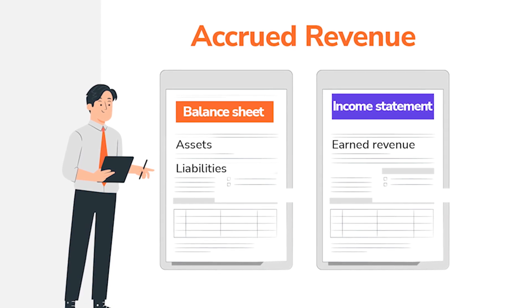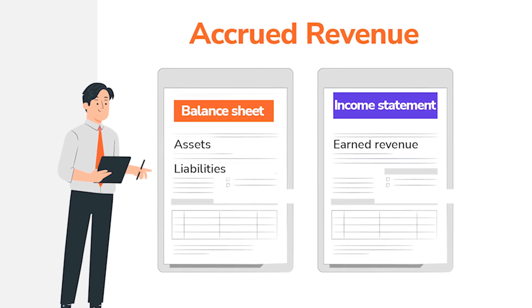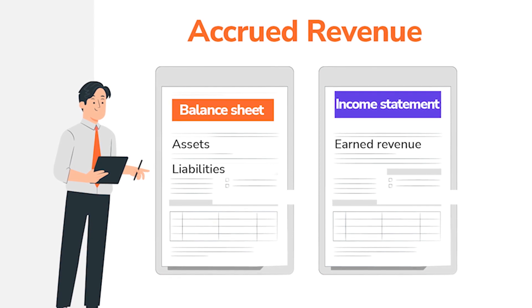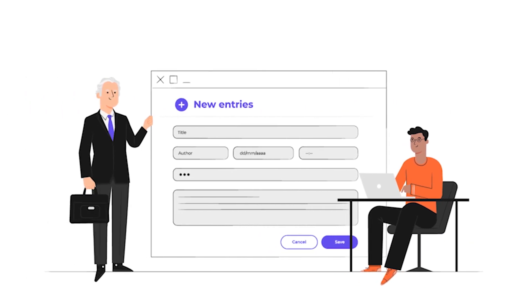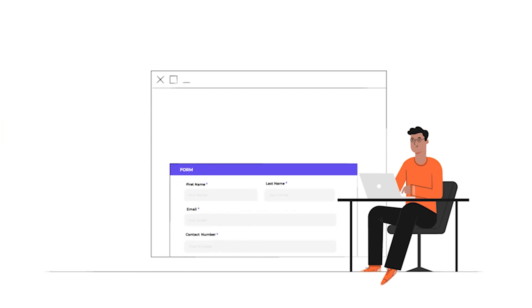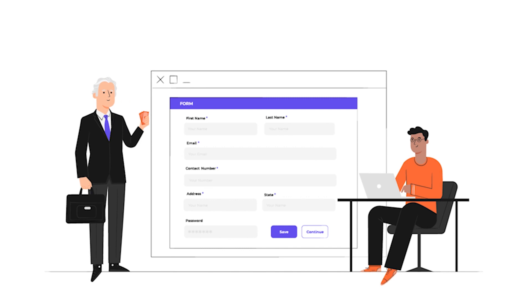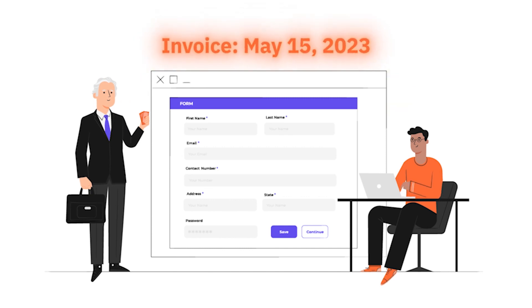Let's look at how to record accrued revenue on your balance sheet first. A balance sheet is a statement that outlines your assets and liabilities. Anything added to your balance sheet doesn't impact your income statement. Imagine that you're a website developer. A business owner approaches you to design their new website. You start work at the beginning of April and finish the website by the end of the month. The client is happy with your work and they're ready to pay, but you don't raise the invoice until mid-May. So you've done the work, but the client hasn't paid yet.